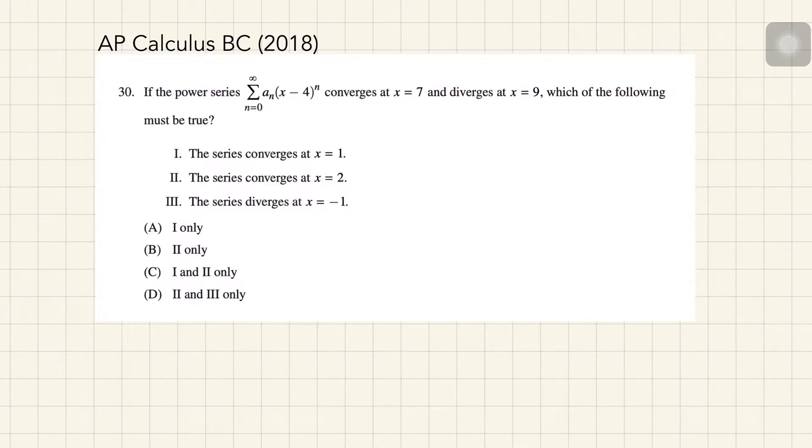According to the question, you can see the power series is AN times (x minus 4) to the power of n, which means this power series is expanded at x equals 4. So x equals 4 is the center point here. Don't forget the interval of convergence is symmetric with respect to the center point, which is 4.